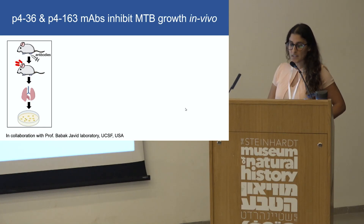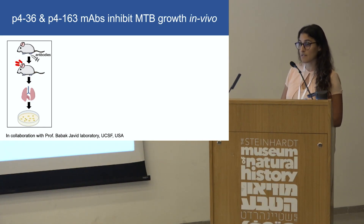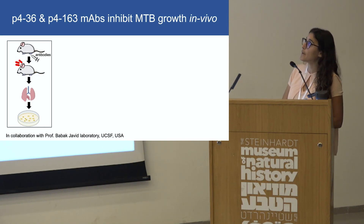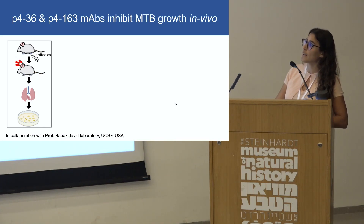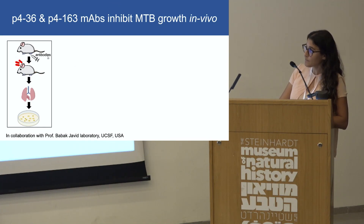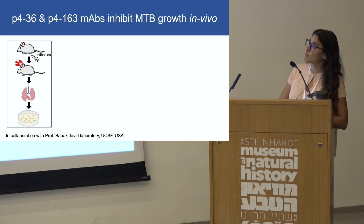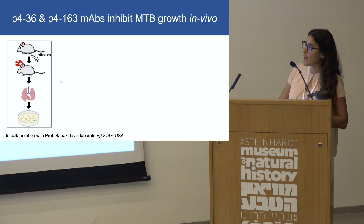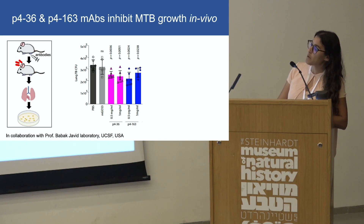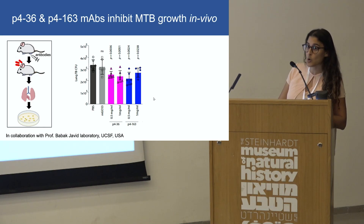After identifying two antibodies, P436 and P463, that inhibit mycobacterium in culture in an Fc-dependent manner, we wanted to take it a step forward and understand if this inhibition effect also occurs in vivo. We injected our antibodies into mice and then gave them an aerosol challenge of pathogenic bacteria. Following three weeks, the mice were sacrificed and bacterial load in the lungs was determined. We were very happy to see that the inhibition effect was preserved, with about 30 to 40% inhibition with our antibodies.